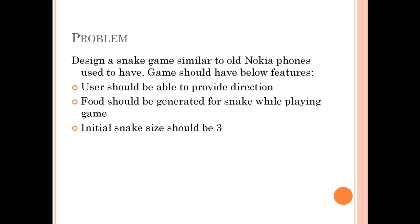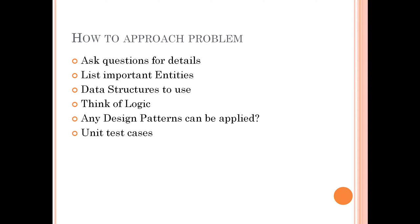There are three features listed. One: user should be able to provide direction. Two: food should be generated for the snake while playing the game. Three: initial snake size should be 3. I have also listed six points we have to consider before getting into design — these points can be applied to any design problem.